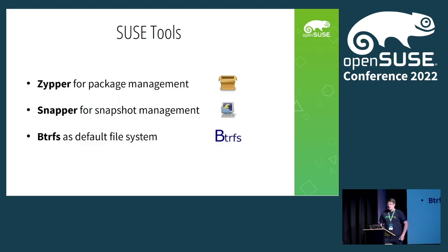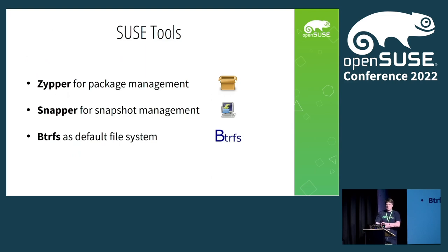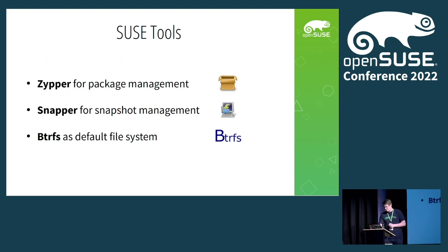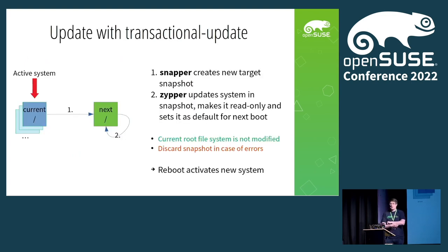In contrast to other systems, we are building on existing technologies. Basically what transactional update is, is it's a wrapper around our own tools — zipper for package management, snapper for snapshot management, and of course Btrfs as the default file system for all these snapshots. In theory, we are vendor-neutral.